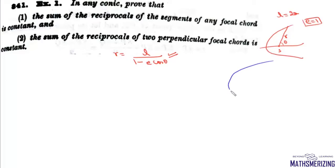Using this polar equation we will prove that the sum of the reciprocals of the segments of any focal chord is constant. Suppose we have any general conic — it may be an ellipse, hyperbola, or parabola — and we have a chord which passes through its focus.